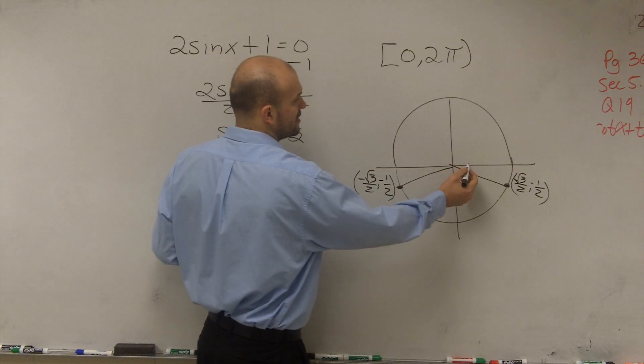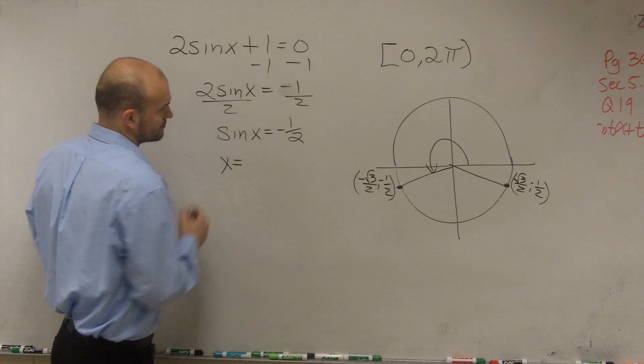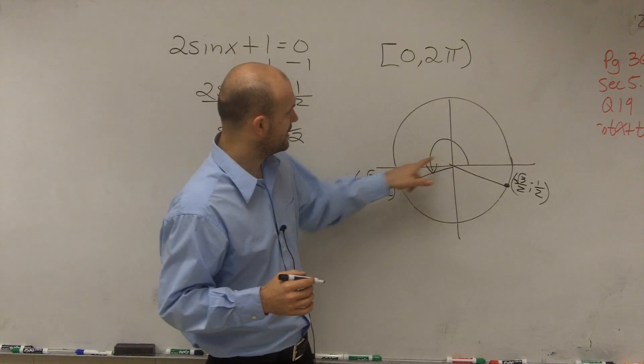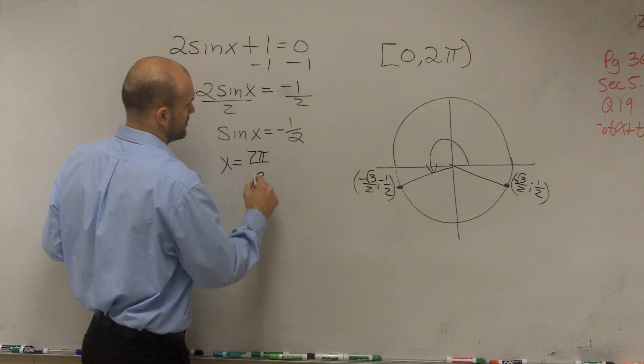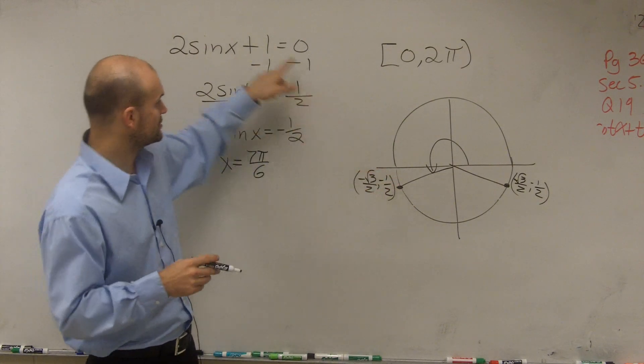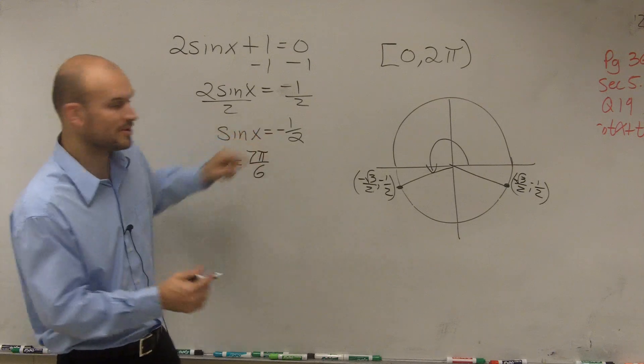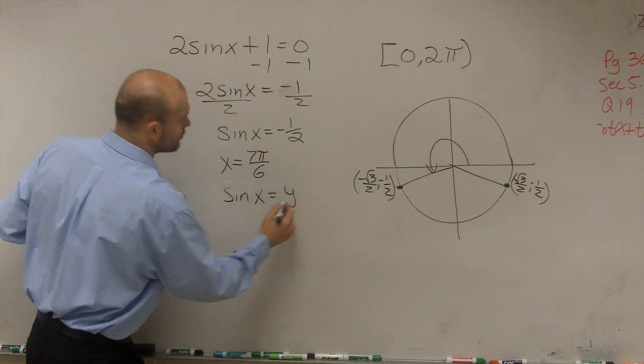So our first point, our first angle, when x equals 7π over 6, we're going to have a solution. Because you look at it, sine of x, remember the sine of your angle x equals your y coordinate.